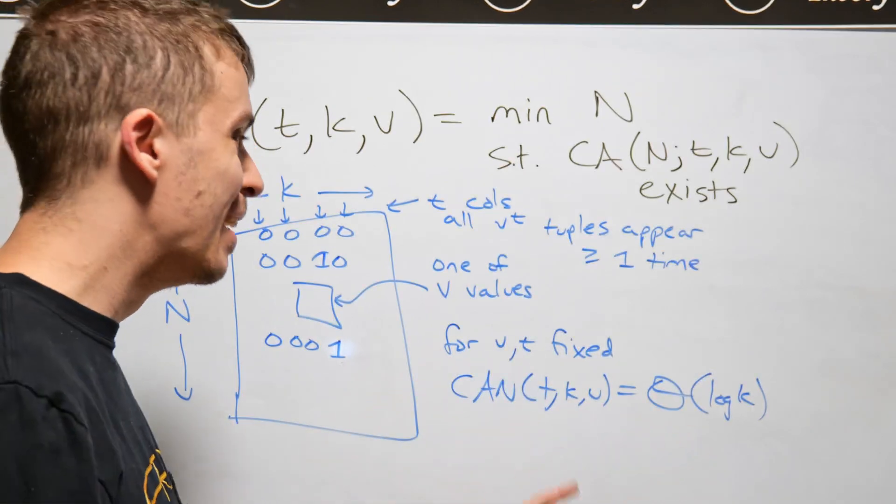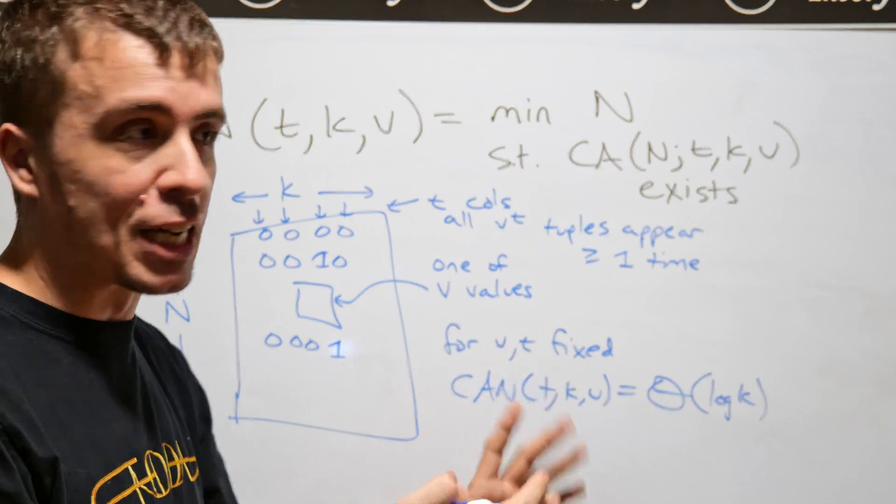then that means that the number of rows I will need is going to be a logarithmic of a billion times a constant that depends on v and t. And that constant actually is pretty terrible. It's actually like v to the t, roughly exponential.